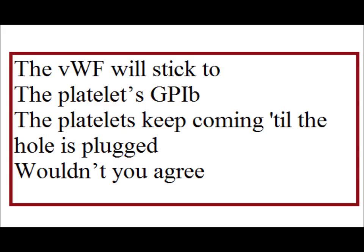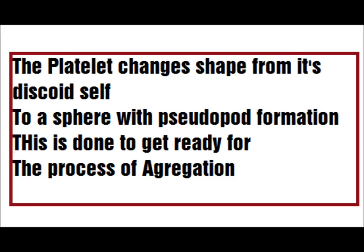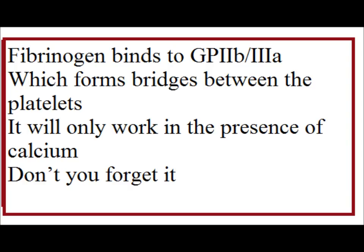The Von Willebrand Factor will stick to the platelet's GP1B. And the platelets keep coming till the hole is plugged. Platelets change shape from their discoid cell to a sphere of pseudopod formation. This is done to get ready for the process of aggregation. Fibrinogen finds GP2B3A with four connections between the platelets.